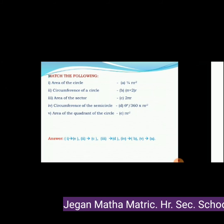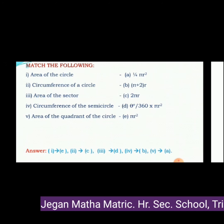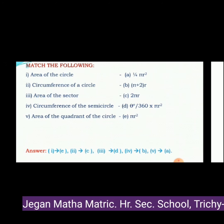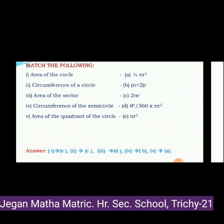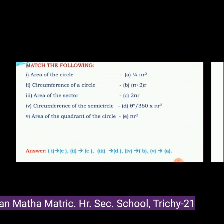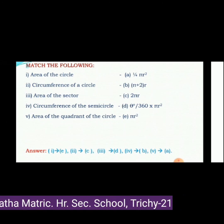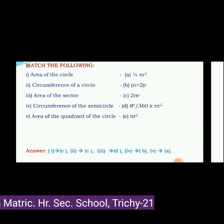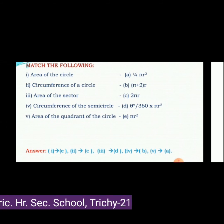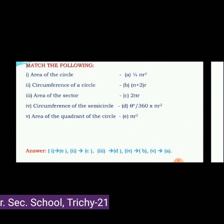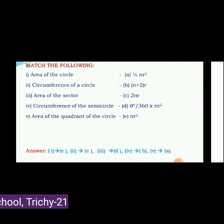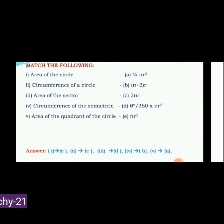Match the following: Area of a circle = π r² — answer is E. Circumference of a circle = 2π r — answer is C. Area of a sector = (θ / 360) × π r² — answer is D. Circumference of a semicircle = (π + 2) × r — answer is B. Area of a quadrant of a circle = (1/4) π r² — answer is A.